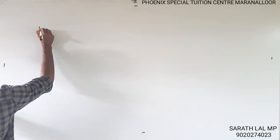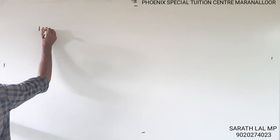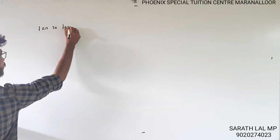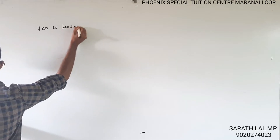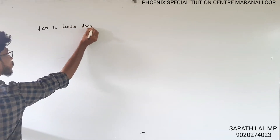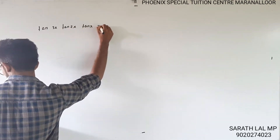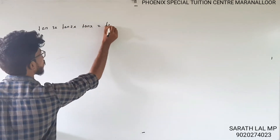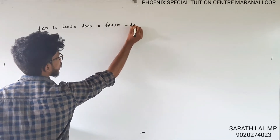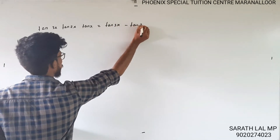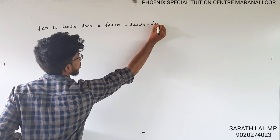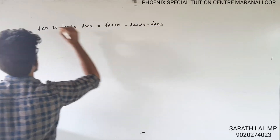Let's prove that tan3x · tan2x · tanx = tan3x - tan2x - tanx. Let's prove that.